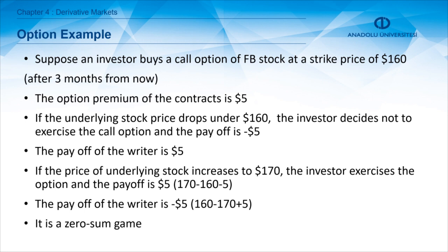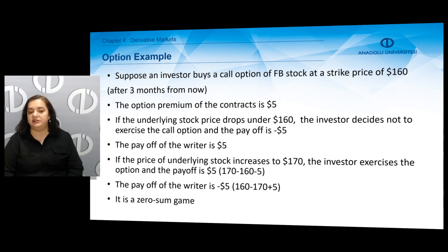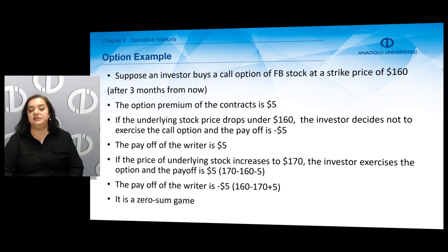If the price of the underlying stock increases to 170 dollars, the investor exercises the option because he has the right to purchase it at the lower price of 160 dollars determined in the option contract. Instead of paying 170, he buys at 160, making a profit of ten dollars. But since he paid a premium of five dollars, the net payoff is five dollars, whereas the payoff of the writer is minus five dollars. Again, similar to forward contracts, this is a zero-sum game.